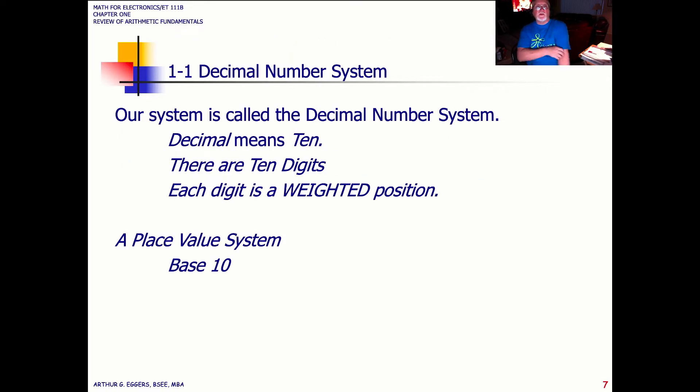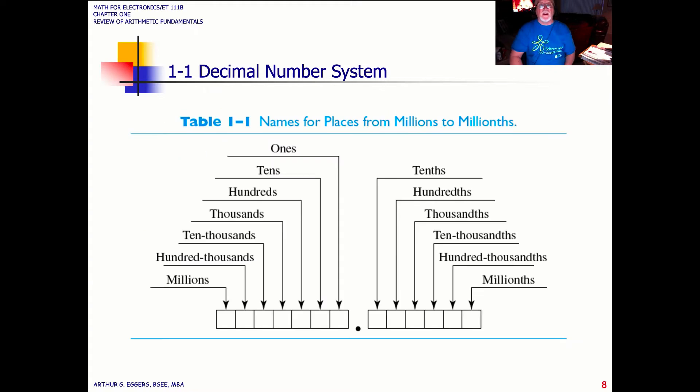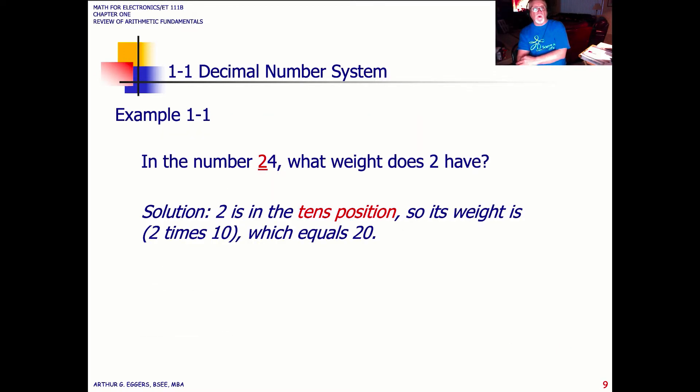The decimal system means exactly deci means 10, so 10 digits, in this case 0 through 9, and then we start over again starting at 10. Each digit is a weighted position within the base 10 or the place value system of base 10. This chart, to start with, you need to ingrain this into your memory. You need to have this at your fingertips. If you don't have a copy of it handy, make a copy of it and keep it handy so that you can continually refresh yourself until this becomes second nature.